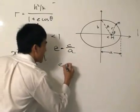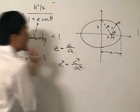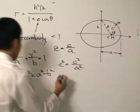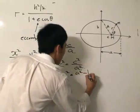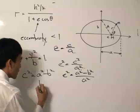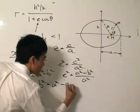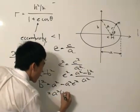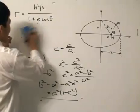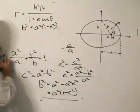e = c/a, so let's square both sides. We know that c² = a² − b². Therefore, e² = (a² − b²)/a². Rearranging for b²: b² = a² − a²e², which gives b² = a²(1 − e²). So we have eliminated c. Our goal, loosely speaking, is to really find the period T — the time it takes for one revolution — and the semi-major axis a.